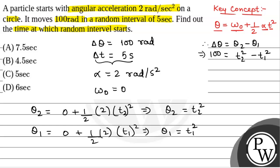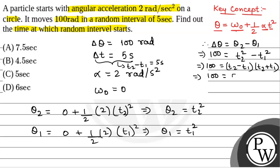We have been given delta t equals 5 seconds, that is t2 minus t1 equals 5. Using the difference of squares: a squared minus b squared equals (a minus b)(a plus b), we get 100 equals (t2 minus t1)(t2 plus t1) equals 5 times (t2 plus t1). Therefore, t2 plus t1 equals 20.